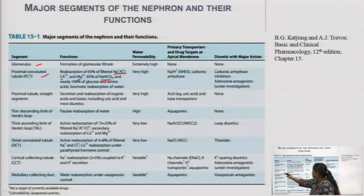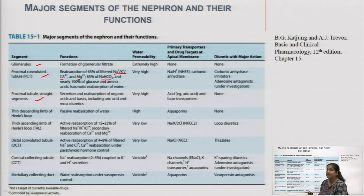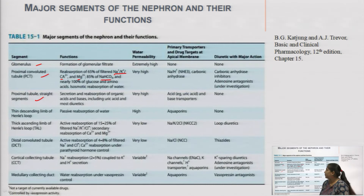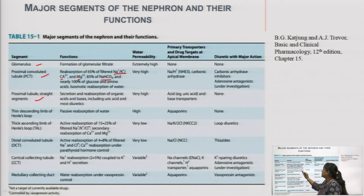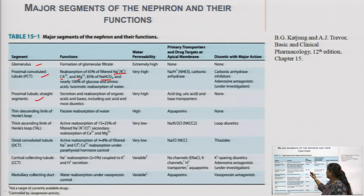The third part is the proximal tubule straight fragment — the extended part of the proximal convoluted tubule. It functions as secretion and reabsorption of organic acids and bases, which includes uric acid and mostly the diuretics. Water permeability here is also very high.